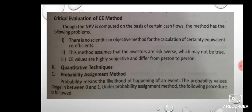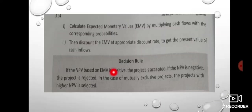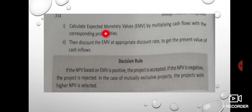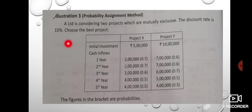Under the probability assignment method, the following procedure is followed: calculate the expected monetary value (EMV) of the cash flows, then discount the EMV. If the NPV based on EMV is positive, accept the project; if the expected monetary value is negative, we will reject it.